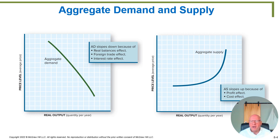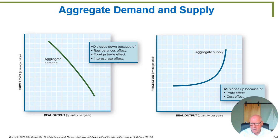The foreign trade effect refers to the fact that if American prices are falling, foreigners' desire to buy American goods goes up. And vice versa: if American inflation is running strong and American prices keep rising, a foreigner's desire to buy American products would go down. So again, you would have the aggregate demand curve sloping downward.